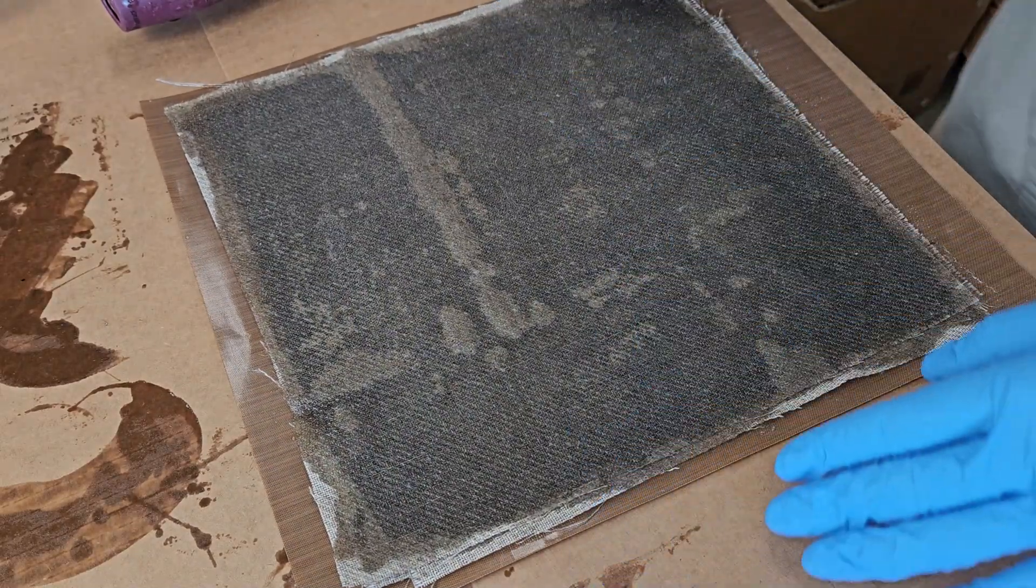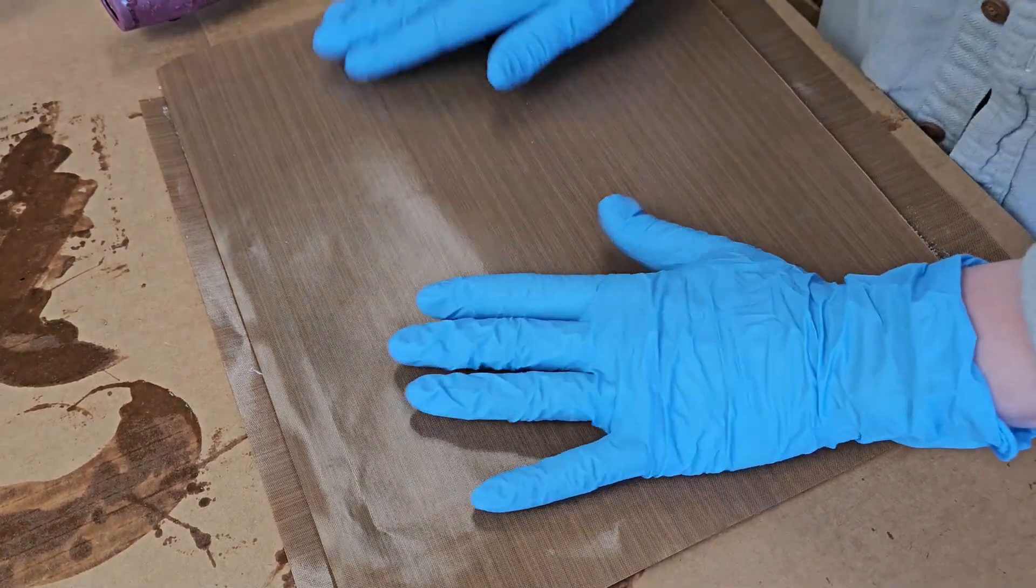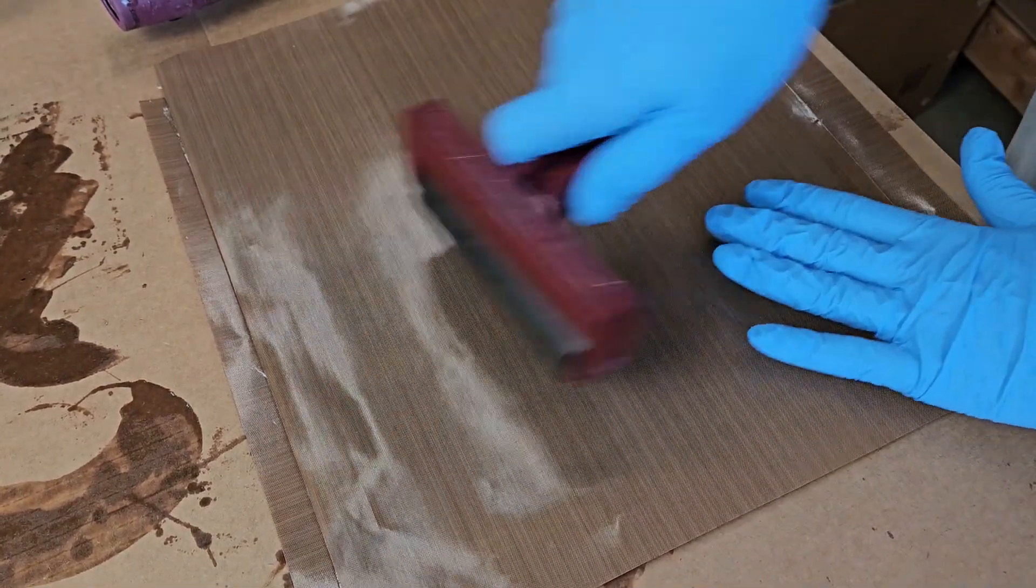So it should be nice and wetted out now. Add in that top piece of the Teflon coated peel ply. Now I'm gonna try to roll out some of those bubbles and excess resin.